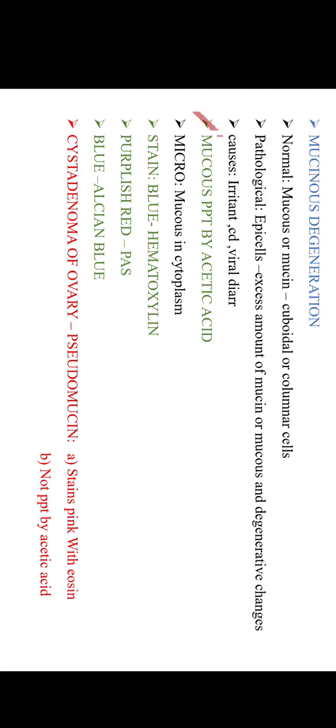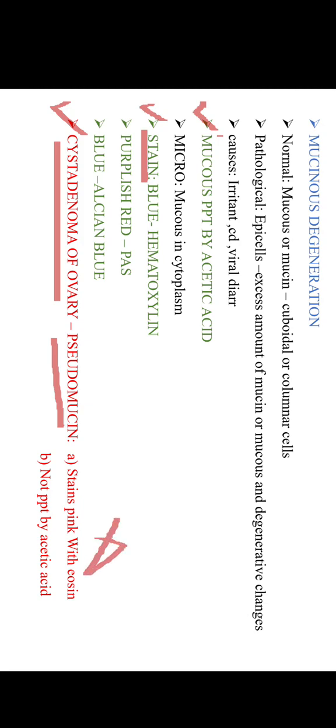Under pathological conditions, the epithelial cells secrete excess amounts of mucus or mucin along with undergoing degenerative changes. The important point is that mucus is precipitated by acetic acid. For staining: mucus stains blue with hematoxylin, purplish red with PAS, and blue with Alcian blue. Pseudomucin is secreted by cystadenoma of the ovary; the difference is that pseudomucin stains pink with eosin and is not precipitated by acetic acid.